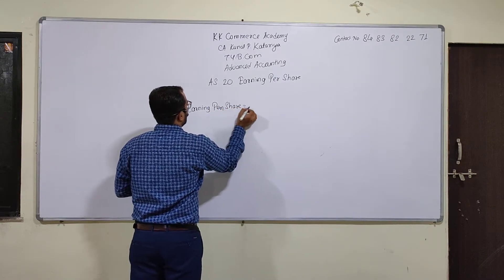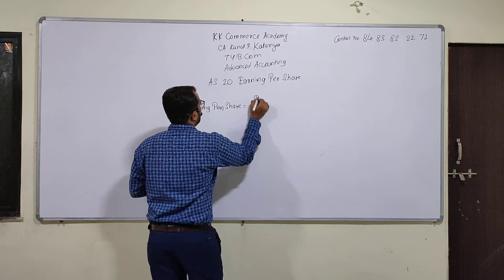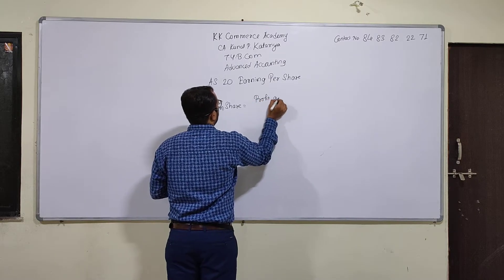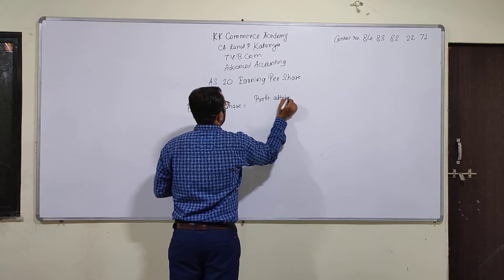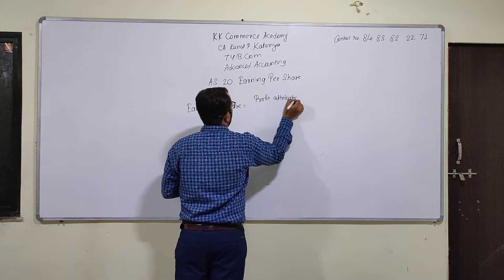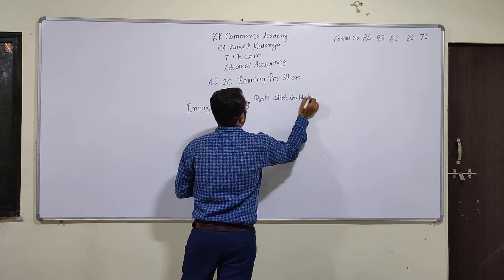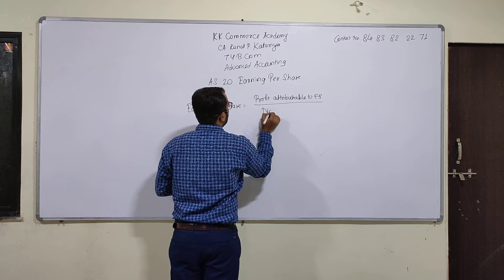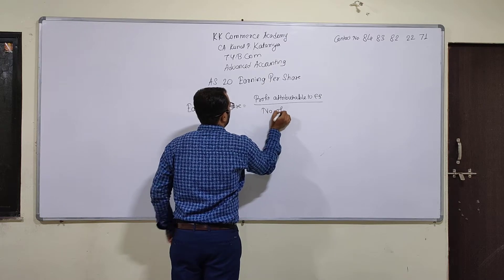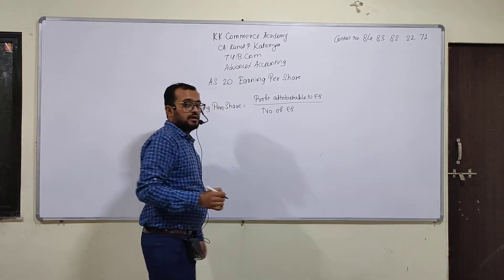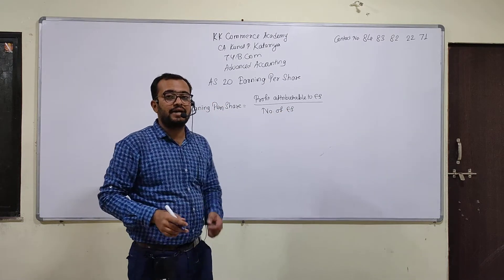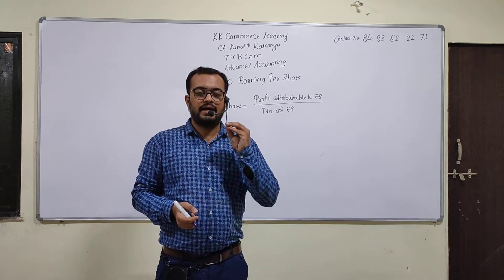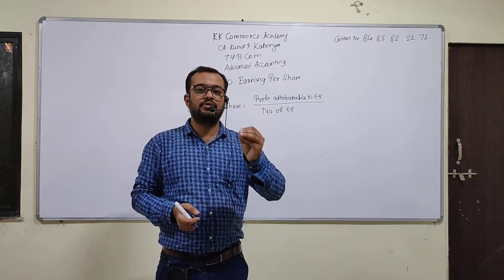EPS is the formula: profit attributable to equity shareholders upon number of equity shares. Now what is profit attributable to equity shareholders? This is the profit that is saved for equity shareholders.